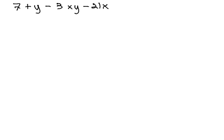Let's take a look at this problem: 7 plus y, minus 3xy, minus 21x. As there are four terms, we'll probably factor by grouping, splitting down the middle.